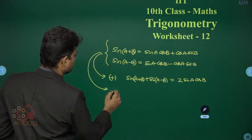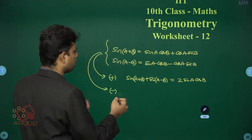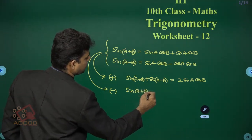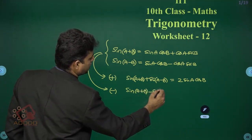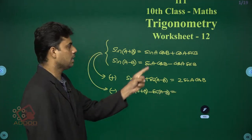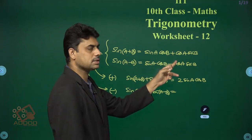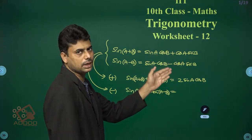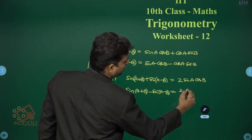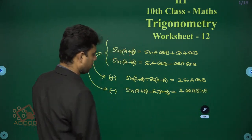By subtracting these two formulas — sin(a+b) minus sin(a-b) — the sin a·cos b terms cancel. The minus of minus becomes plus, so we get 2·cos a·sin b.